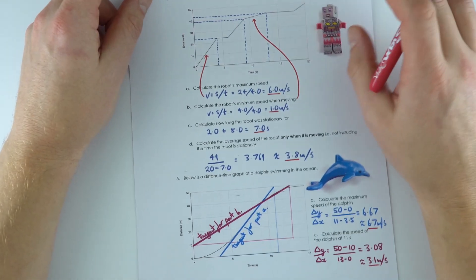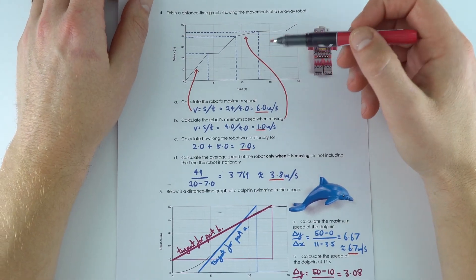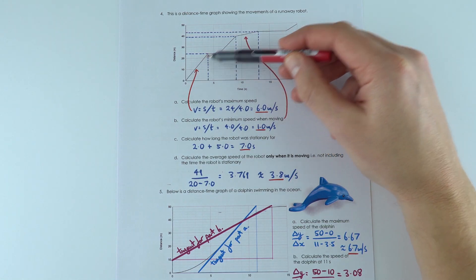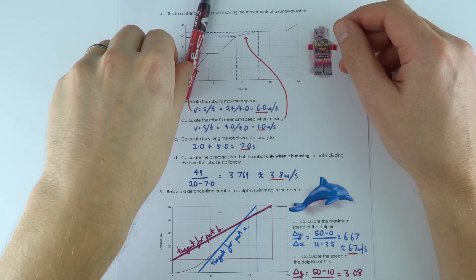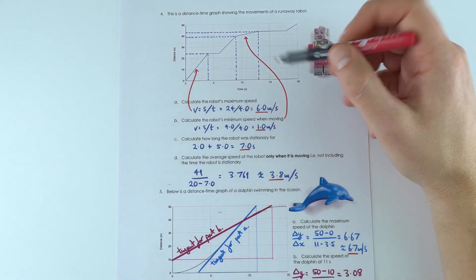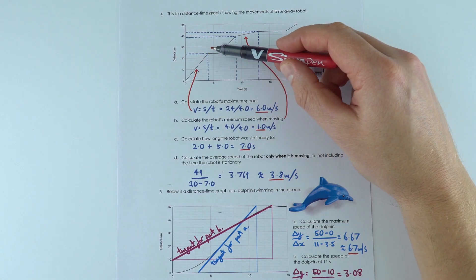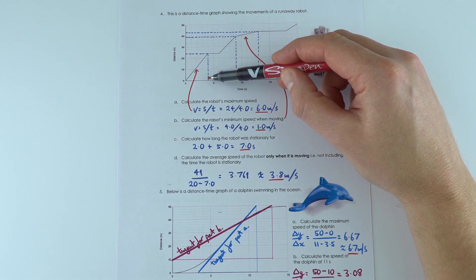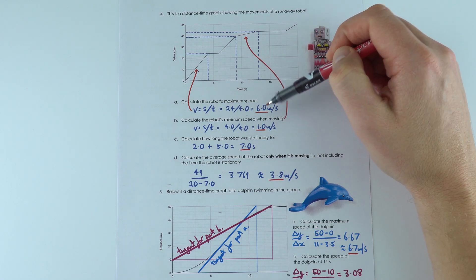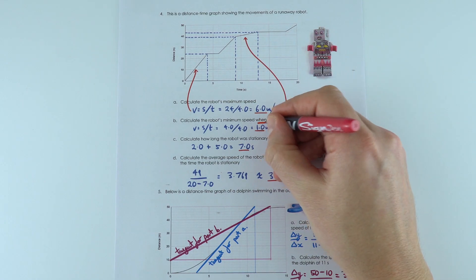The next one, we now had a robot. Again, the maximum speed—we're going to have the steepest gradient, so when the line has the highest value for its slope. Here the maximum speed was 6 meters per second because that's 24 divided by 4. The minimum speed when they're moving, and that's important—their minimum speed